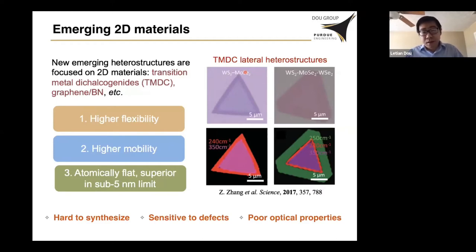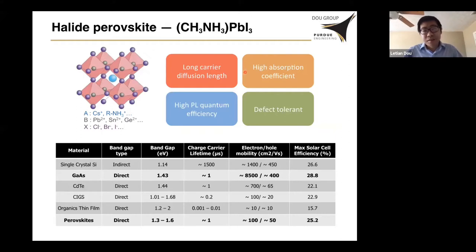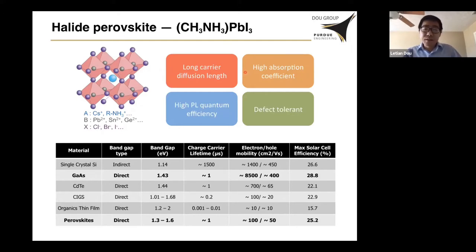As a materials chemist, I am interested in developing new 2D materials that could be potentially more useful, more tunable, and with higher performance. Currently, we are interested in the halide perovskite — this is a superstar material. It has amazing properties, such as extremely long carrier diffusion length and carrier lifetime. They are direct bandgap semiconductors, so they absorb light and emit light strongly. And more importantly, they are defect tolerant, meaning a small amount of defects will not influence device performance. That is because most of the defects found in halide perovskite are shallow — near the band edge or even inside the conduction or valence band.